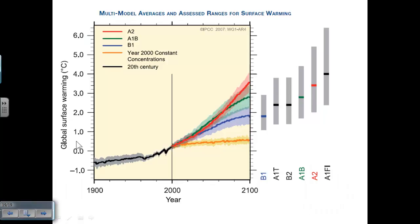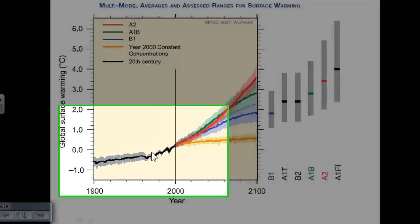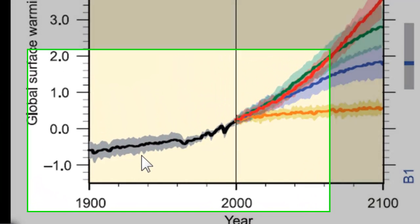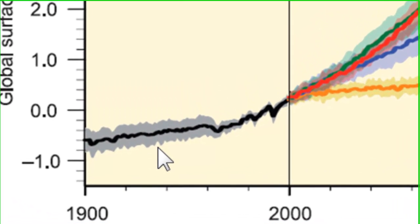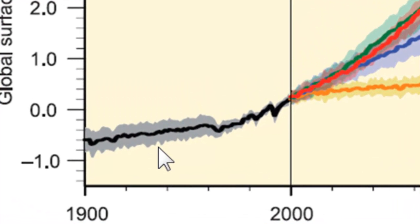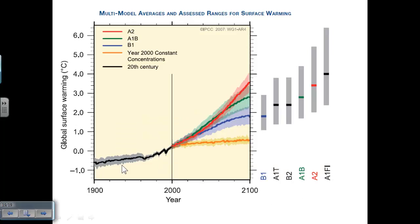In this graph, we're taking a look at just one output. You can see it over here on the y-axis, global surface warming. And on the graph, you will see different lines. The black line covers what we already know in the 20th century. What has the global surface temperature been over that time? And I want to draw your attention to the gray area that adjoins the black line. This is our line of uncertainty. How confident are they in that measurement?